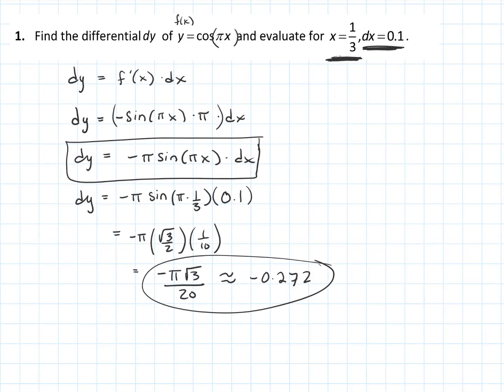This is a bit of a renaming of what we've been talking about — thinking of dy/dx as a ratio, a slope we're breaking apart, where dy depends on whatever dx is. dy becomes our dependent variable and dx is independent, just like y depends on x. This whole section introduces differentials and shows how to find dy for a specific function.